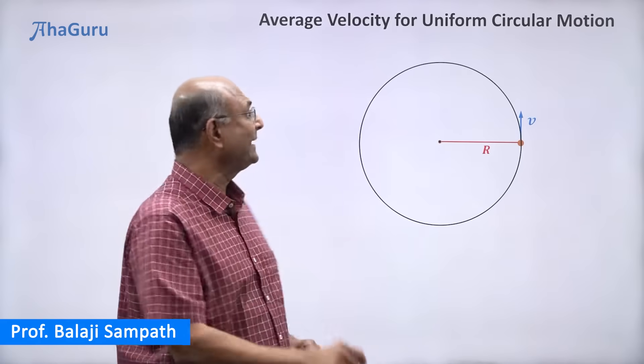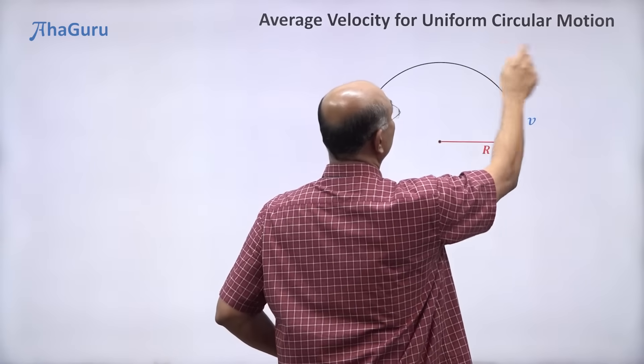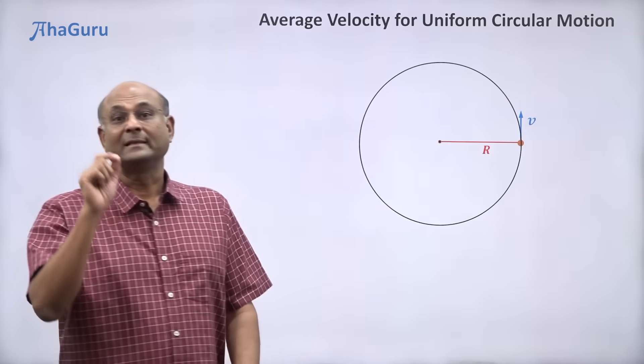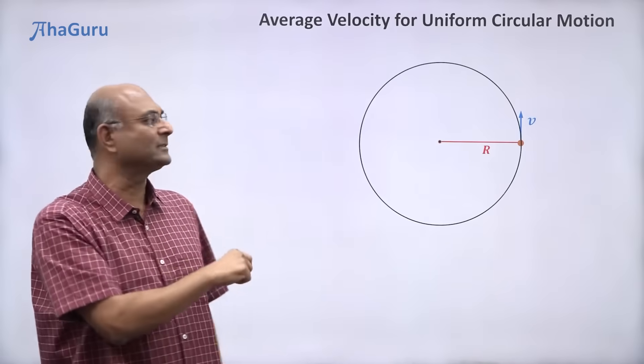Let us now learn how to find the average velocity for uniform circular motion. The word uniform tells us that the linear speed is constant. It also tells us that the angular speed is constant.